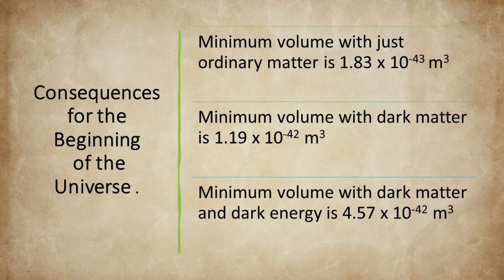This results in a minimum volume of the universe with just ordinary matter of 1.83 times 10^-43 meters cubed. The minimum volume with dark matter is 1.19 times 10^-42 meters cubed. And the minimum volume with dark matter is 4.57 times 10^-42 meters cubed.